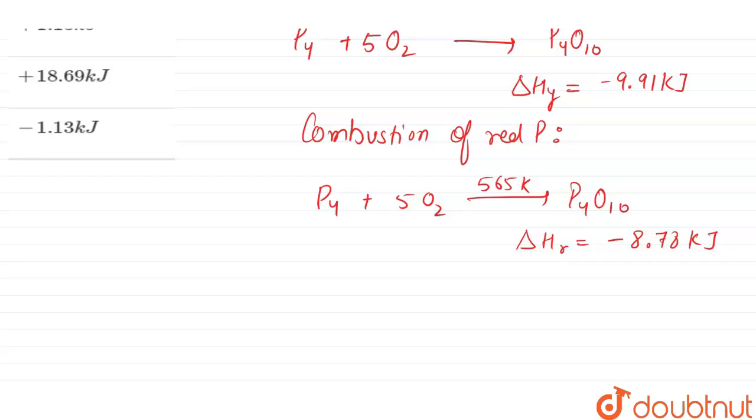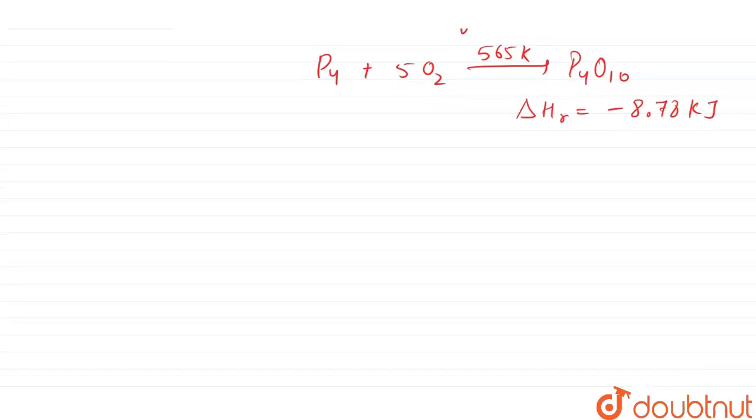Now we have to find out the heat of transition from yellow phosphorus to red phosphorus. So heat of transition equals heat of combustion of yellow phosphorus minus heat of combustion of red phosphorus.